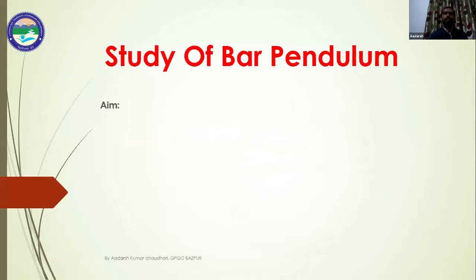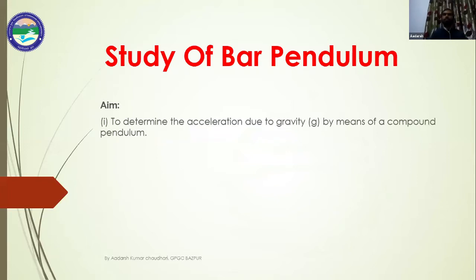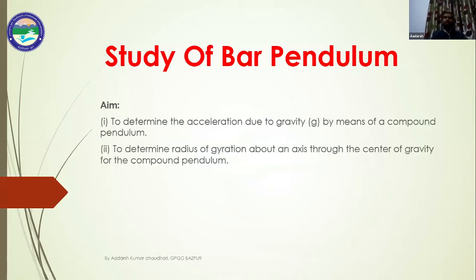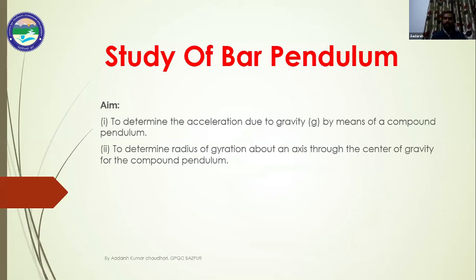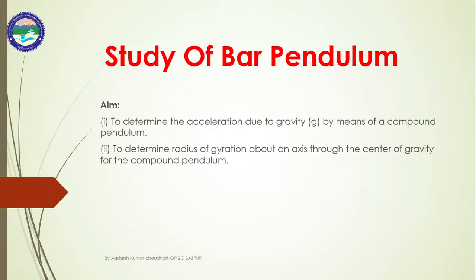The aim of this experiment is twofold: first, to determine the acceleration due to gravity using a compound pendulum; and second, to determine the radius of gyration about an axis through the center of gravity. We are using the term 'compound pendulum' because the theory for calculating gravity and radius of gyration applies to it. A bar pendulum is an example of a compound pendulum, and these two terms are used interchangeably.